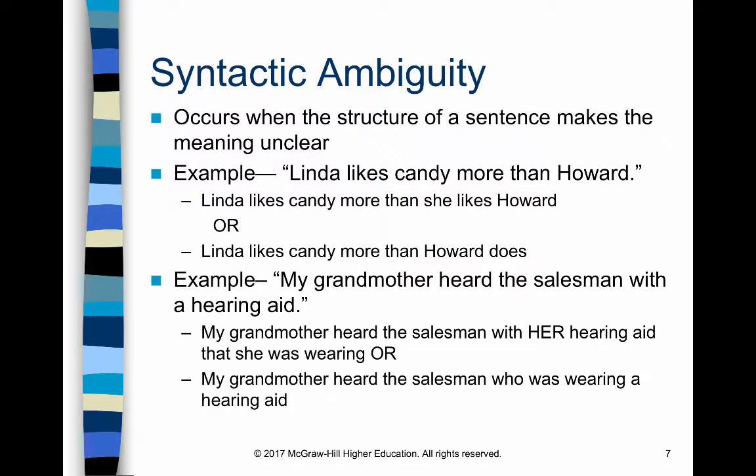Then we have syntactic ambiguity. Syntax has to do with the way sentences are structured, and the ambiguity occurs when that structure makes the meaning unclear. 'Linda likes candy more than Howard.' Does Linda like candy more than she likes Howard, or more than Howard likes candy? Because of the sentence structure, it's hard to tell. 'My grandmother heard the salesman with a hearing aid.' Did she hear the salesman because she was wearing a hearing aid, or did she hear the salesman who was the one wearing the hearing aid? Again, it's unclear.